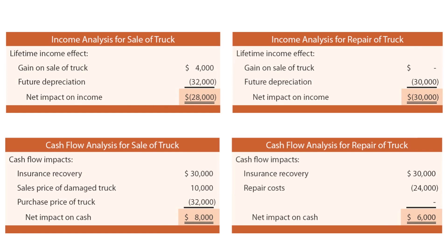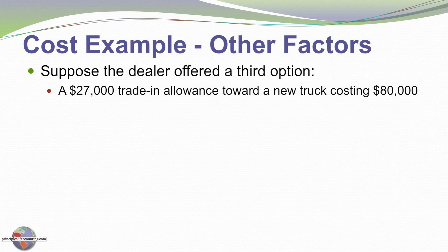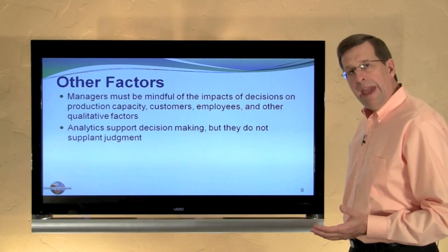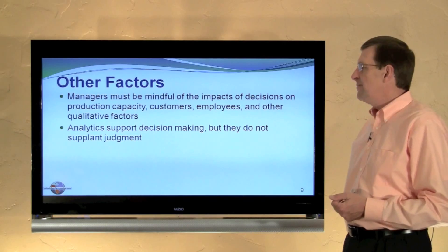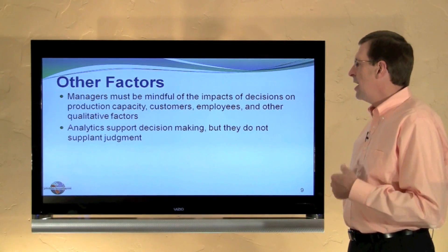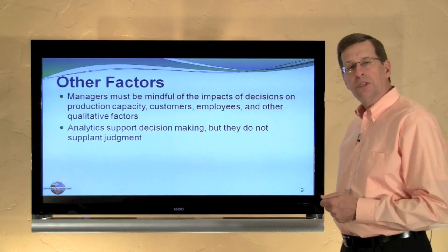We keep circling back to the same conclusion. However, sometimes decisions are not given just two clear-cut options. Suppose the dealer offers a brand new truck for $80,000 with a $27,000 trade-in allowance — the incremental cost of this option would be $53,000, far more than the other choices, but you'd have a brand new truck that may deliver certain qualitative advantages. Managers must be mindful of the impacts of decisions on production capacity, customers, employees, and other qualitative factors. Analytics support decision-making, but they certainly don't supplant judgment.